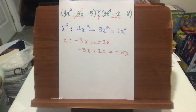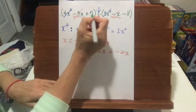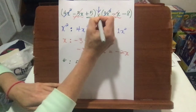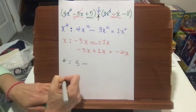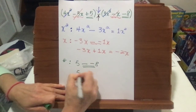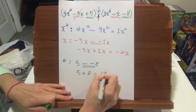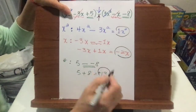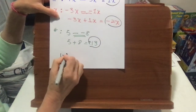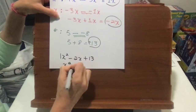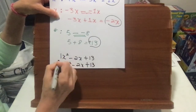We can get rid of the x terms. Lastly, number terms: we have a positive 5. We're going to bounce it off the minus sign in the middle — we're subtracting a negative 8, so this becomes a positive. 5 plus 8 equals 13, and it's a positive 13. Our final answer is everything off the equal sign: 1x squared minus 2x plus 13, or just x squared minus 2x plus 13. And that is your final answer.